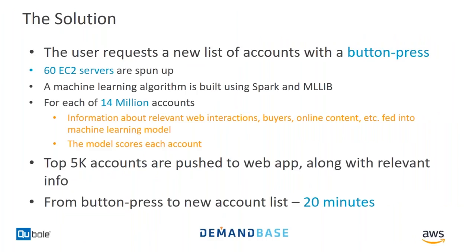The solution for making this faster: a user presses a button, our client logs in and says 'generate my set of accounts.' We spin up 60 EC2 servers on AWS through Kubel. Once those servers are running, we deploy a machine learning algorithm built on Spark and MLlib — the machine learning library built on top of Spark. For each of the 14 million accounts, we model their web interactions, who their buyers are, online content, and firmographic information. All that is plugged into the ML model that scores each account. We take the top 5,000 highest-scored accounts and deliver those to the web app.